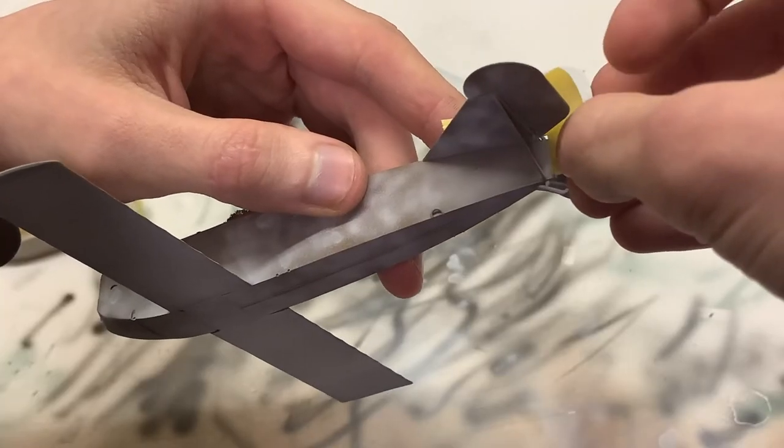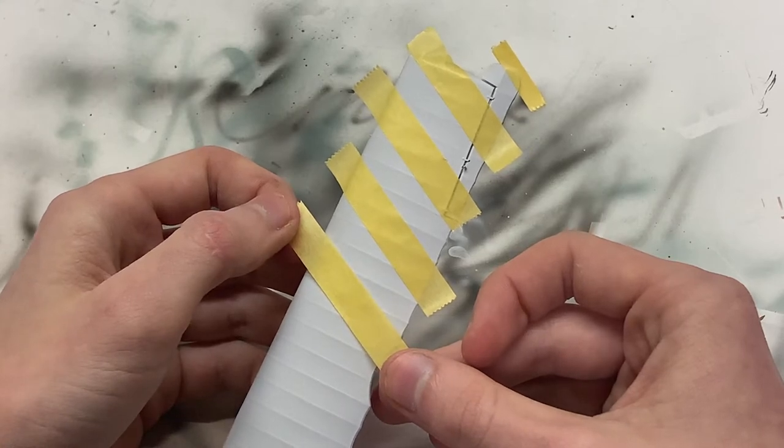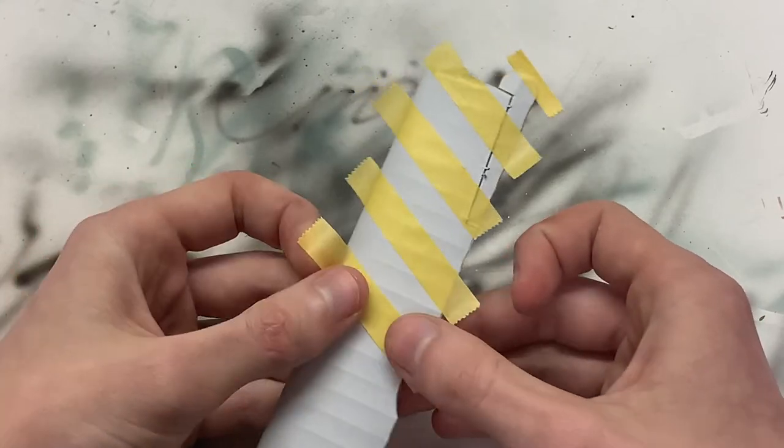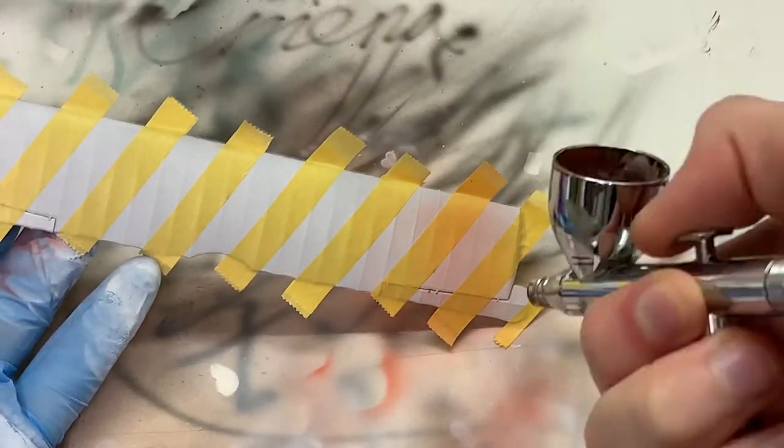Then I masked it off as well as the white stripes on the top wing and prepared everything for the red. I sprayed the top wing with Tamiya Flat Red.